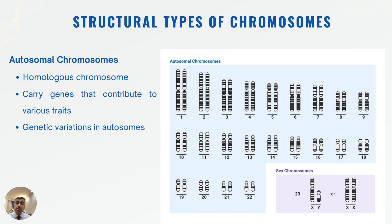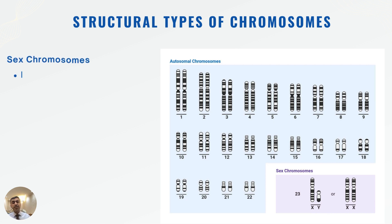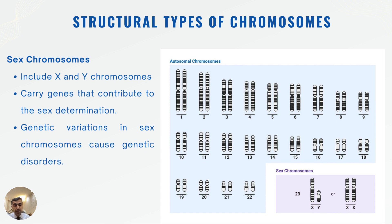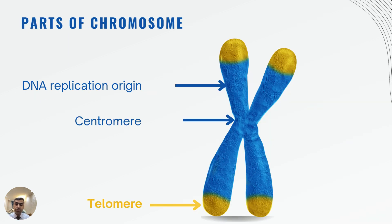The second type is sex chromosomes, which include X and Y. Any change that takes place may cause a genetic disorder or genetic disease — for example, Turner's syndrome and Klinefelter syndrome. Genetic variations in sex chromosomes can bring about disease, as mentioned in previous videos.